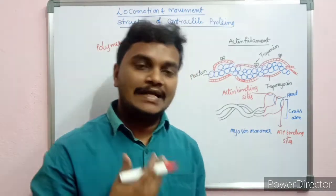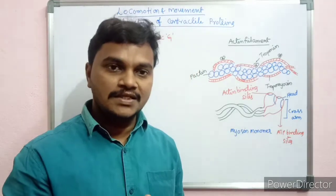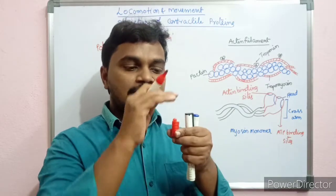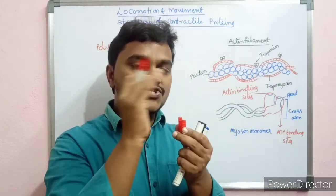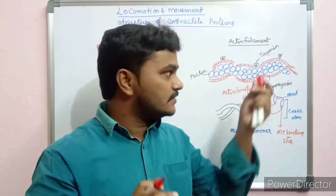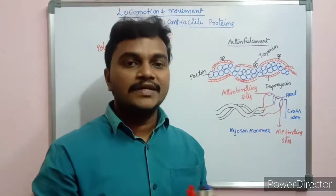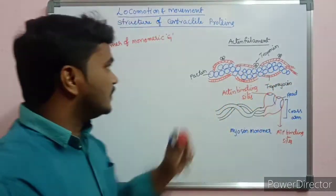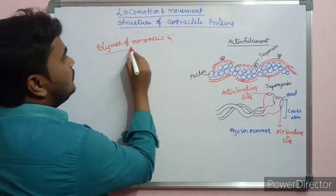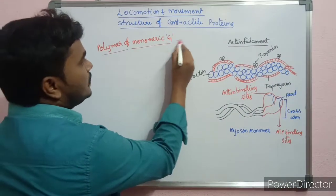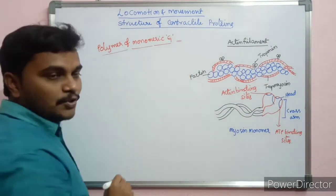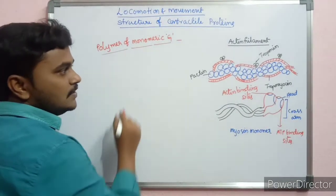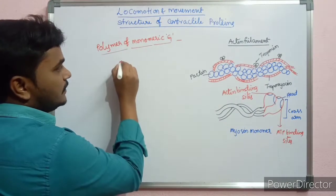These troponin subunits mask the active sites of the actin filament. During contraction, the active sites are unmasked and the mechanism is activated. So actin is a polymer of monomeric globular G-actin protein, forming F-actin filaments.